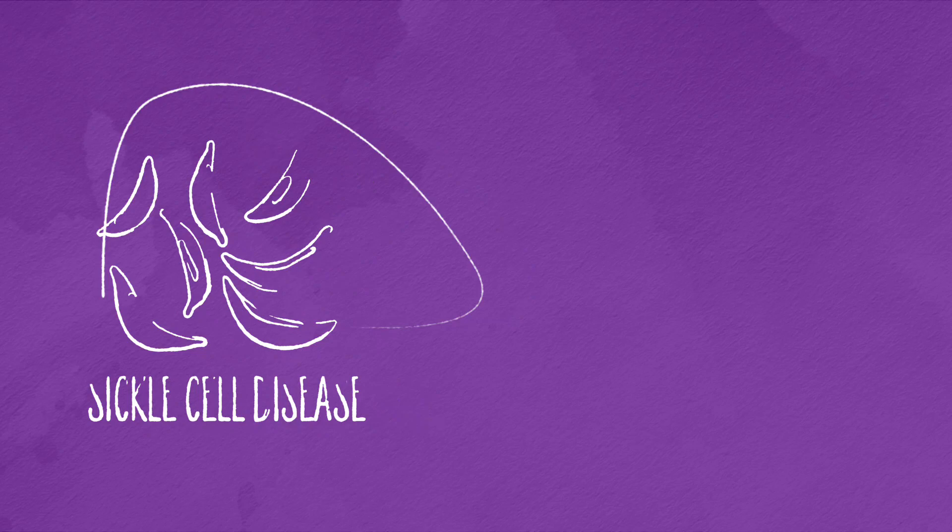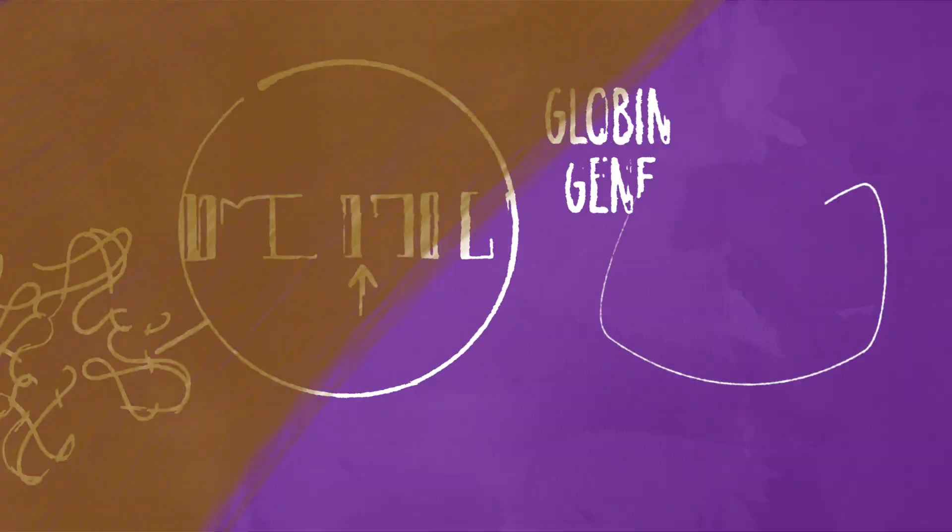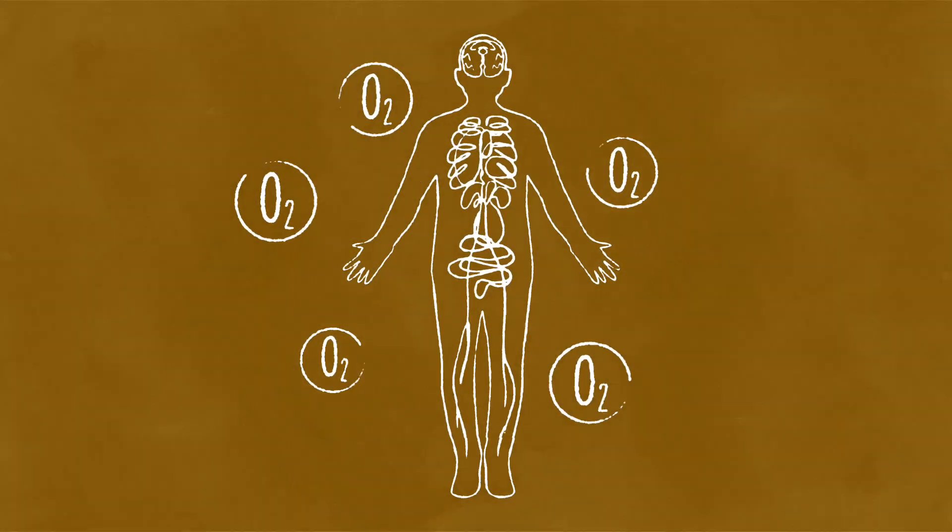Sickle cell disease affects the blood protein hemoglobin, which is made by the globin gene. Hemoglobin is essential to human life. It carries oxygen to every part of the body.